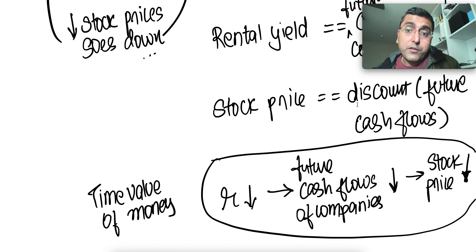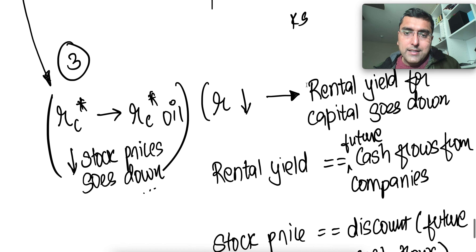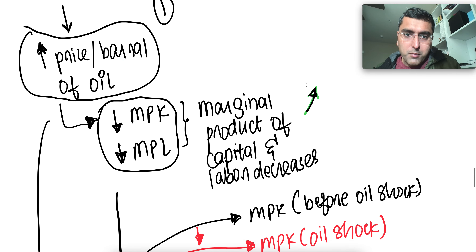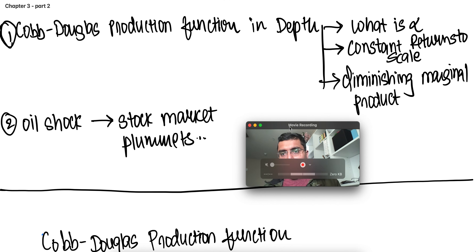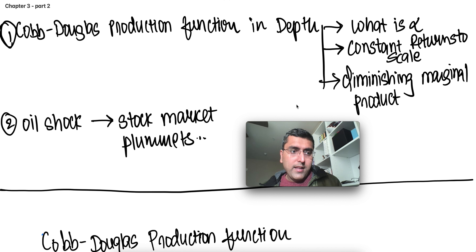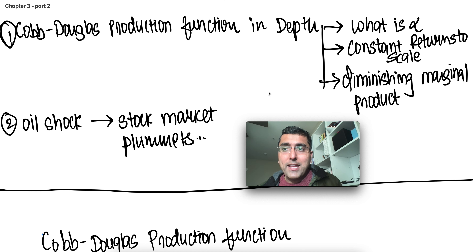When inflation goes up as well, the discount rate goes up, so stock prices collapse further because the discounted cash flow of the stock goes down. So these are the details of why the stock market collapses. We covered the Cobb-Douglas function — what alpha is, constant returns to scale, diminishing marginal product for both capital and labor — and how the oil shock impacts the stock market. In future videos we'll learn that not just oil prices, but inflation and interest rates also impact stock markets. But this is one major variable, and past oil shocks have led to stock markets collapsing — as we're seeing even in May 2022.